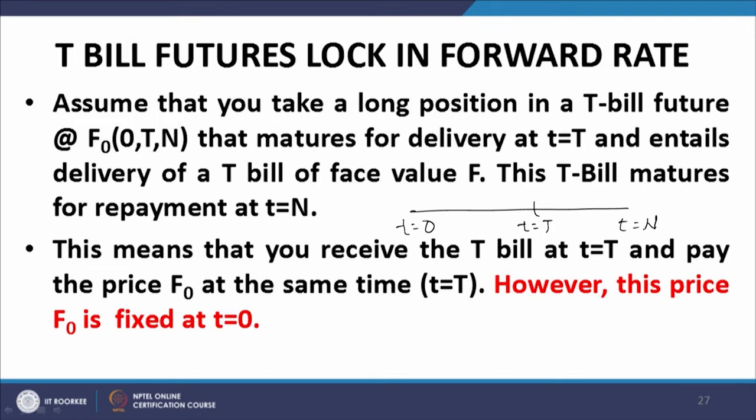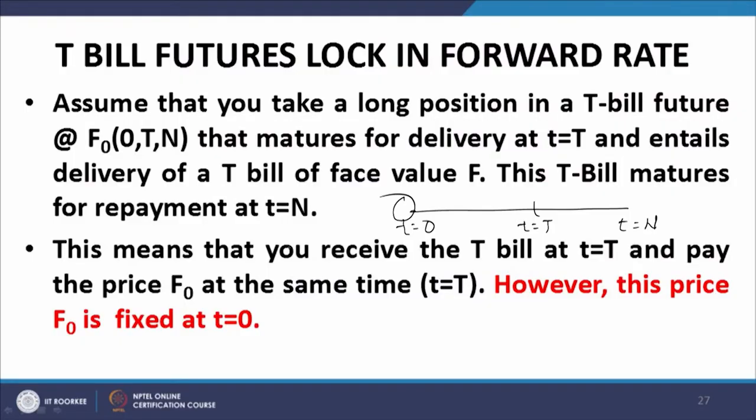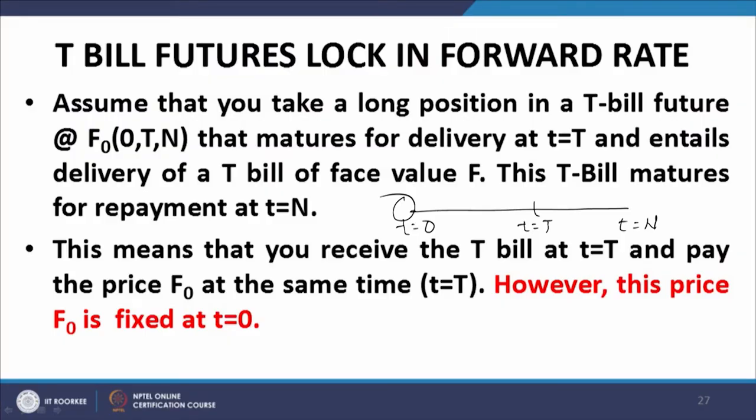If I take a long position in the futures contract, it means I will receive a T-bill at T equal to capital T which will mature at T equal to capital N. The important part is that the price I am going to pay for this bill will be settled at T equal to 0 — agreed as of today — while actual delivery of the bill takes place at T equal to capital T, and the proceeds of the bill at T equal to N.